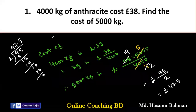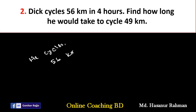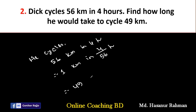Number 2: Dick cycles 56 km in 4 hours. Find how long he would take to cycle 49 km. Same way, he cycles 56 km in 4 hours, that means 1 km takes 4 divided by 56 hours. So for 49 km it will be 49 multiplied by 4 divided by 56.